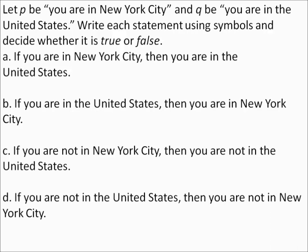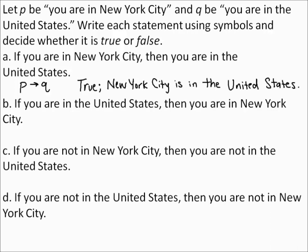Let P be you are in New York City, and Q be you are in the United States. Write each statement using symbols and decide whether it is true or false. Statement A: if you are in New York City, then you are in the United States — written as if P then Q. This statement is true; New York City is in the United States.